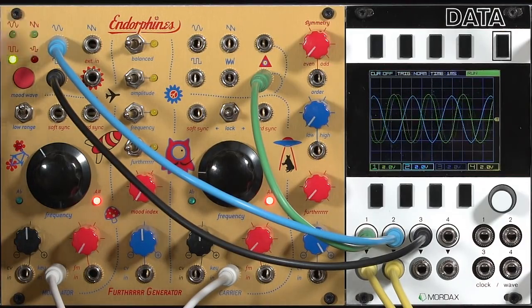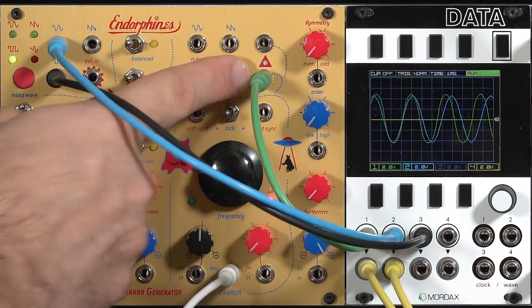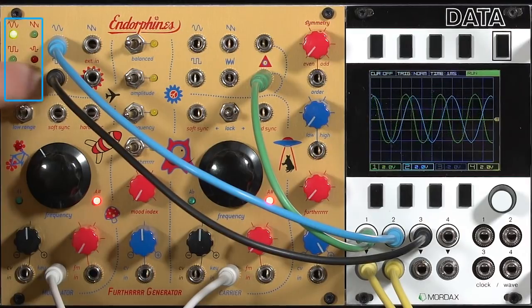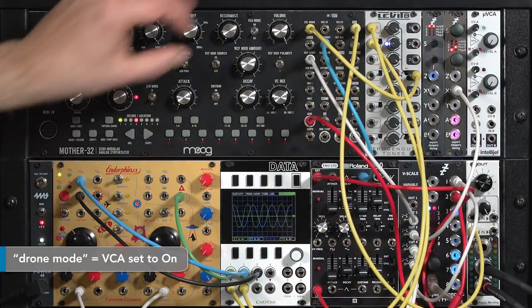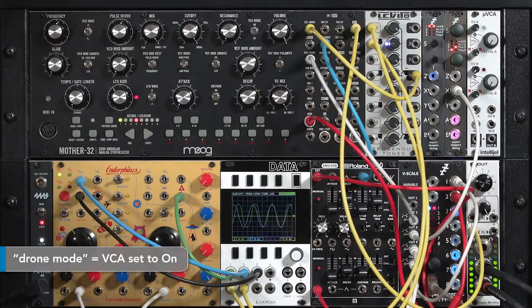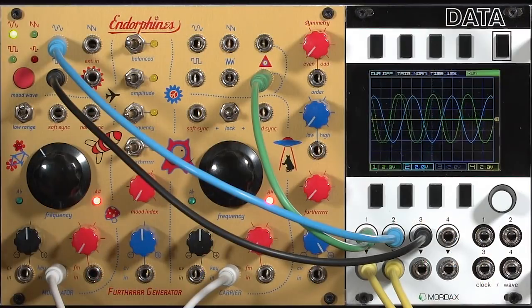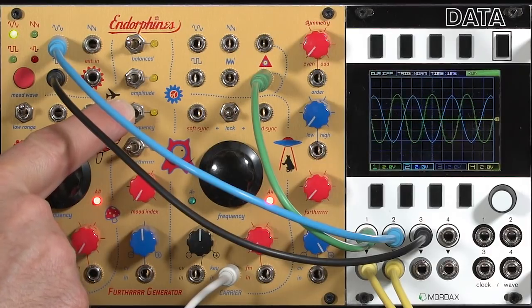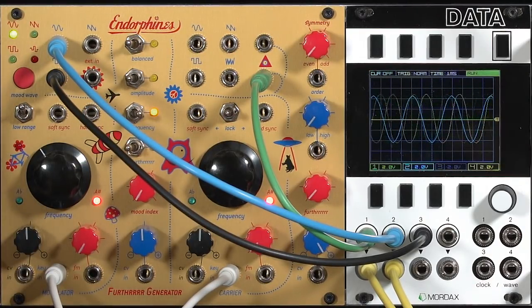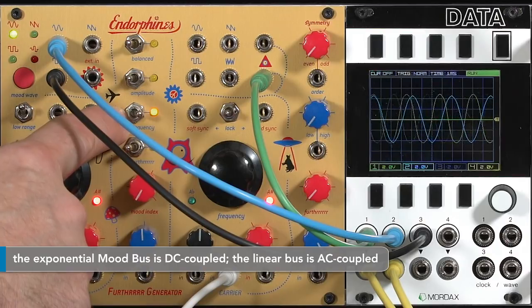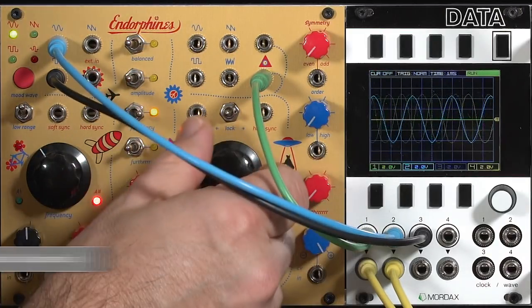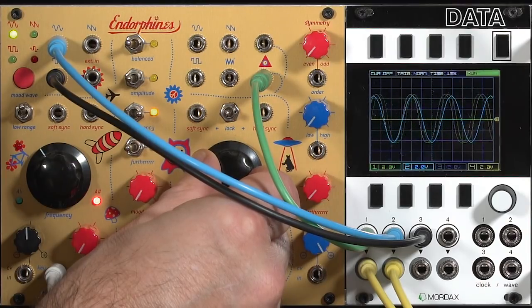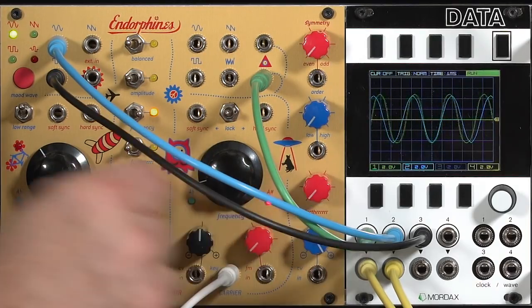We're going to start off with a sine wave modulating the sine wave output from our carrier. I can choose what waveform with the mood wave button here over on the modulation side. And then as we turn on frequency modulation on the modulation or mood bus, we get a slight pitch shift in the carrier. So there must be a little bit of DC offset inside the modulation bus.